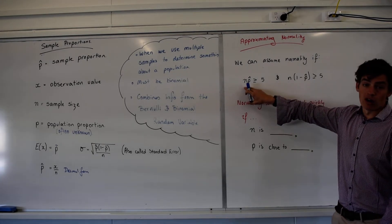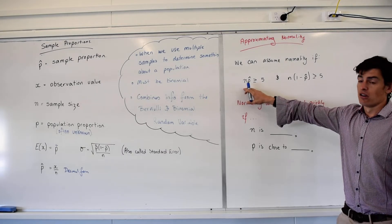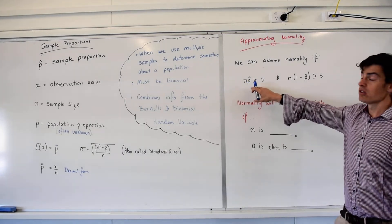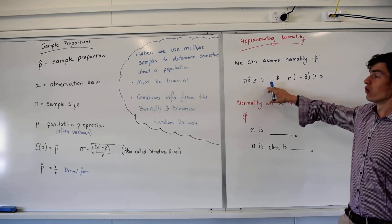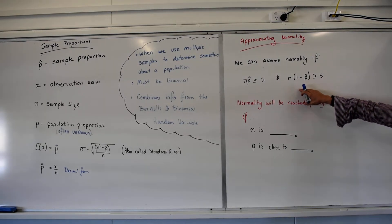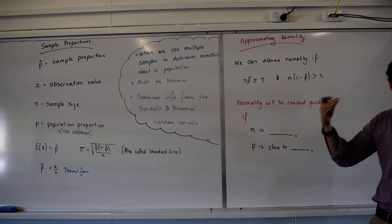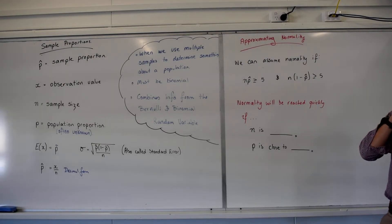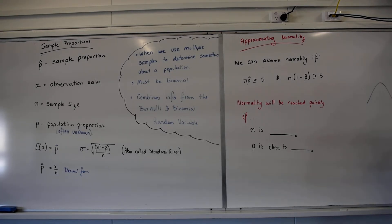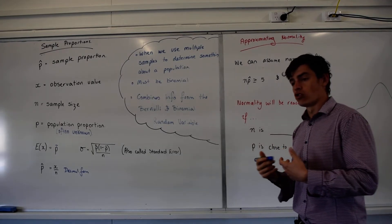If my proportion was 99% though, I'd have 100 times 0.99, which is 99, greater than 5, all good. 100 times 0.01, 1, not greater than 5, not all good. So I can't assume normality there. But there's normality actually meaning that. Normality, so it follows that normal distribution.